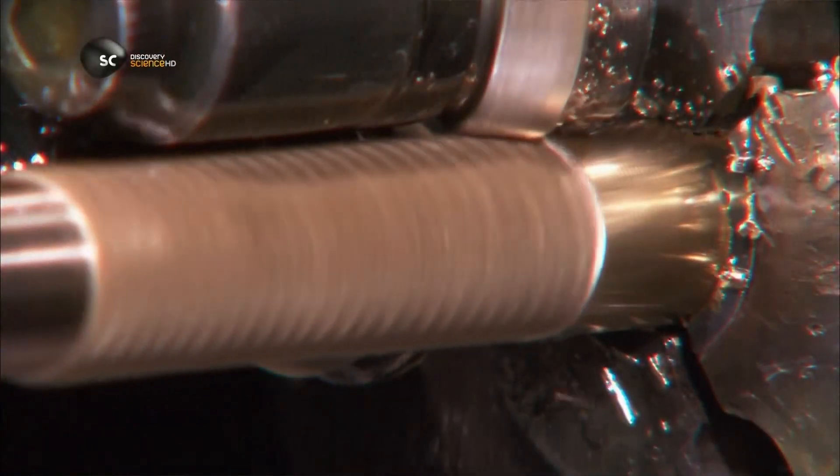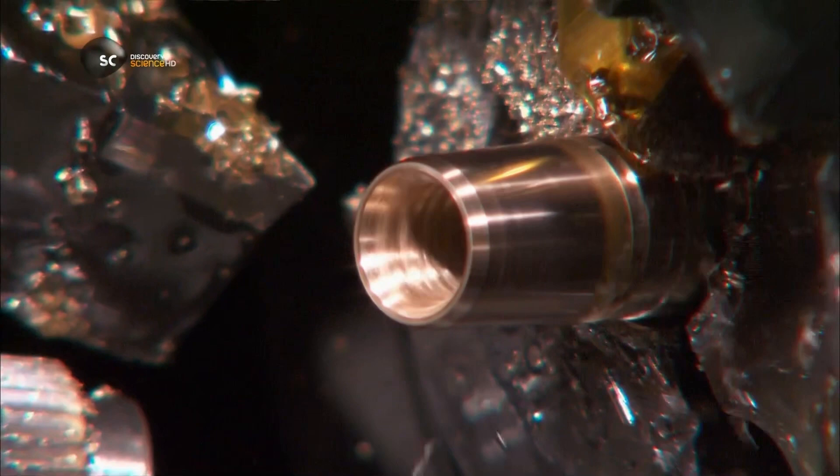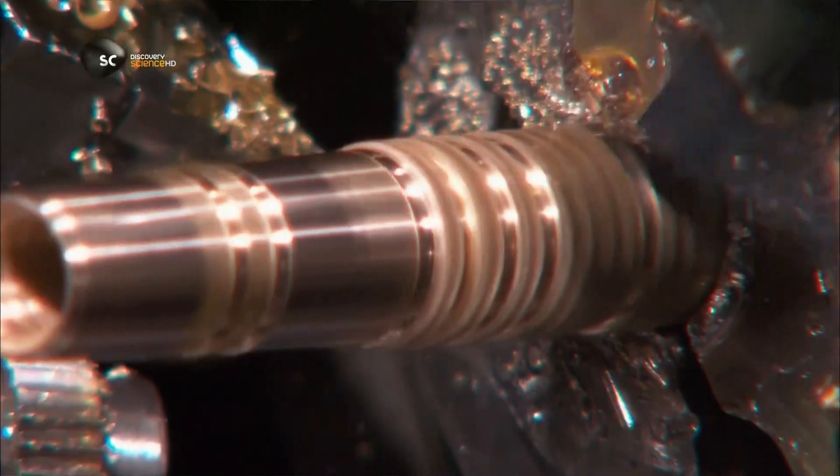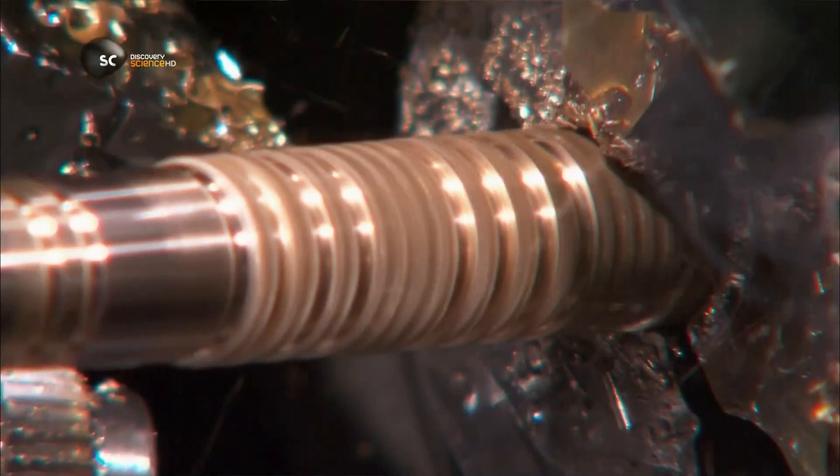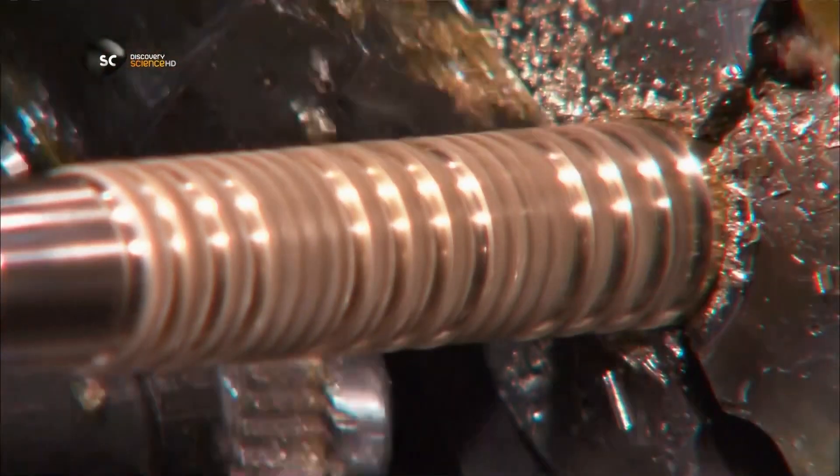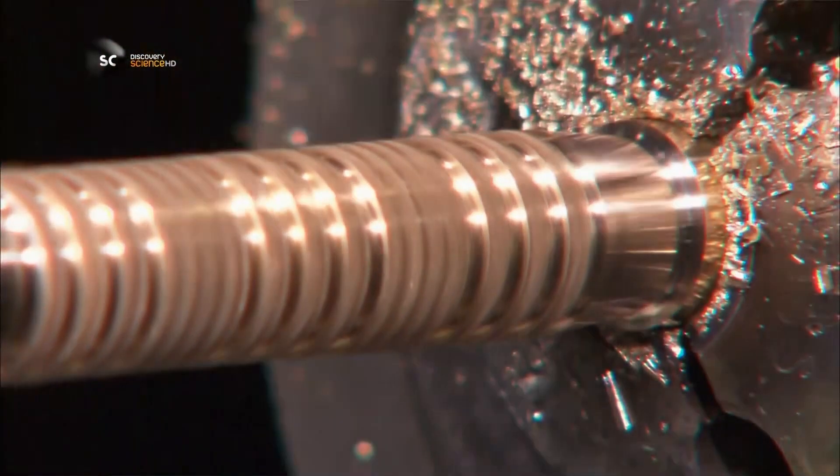Next, tools with angled grooves cut ridges on the outside of the barrel to make the dart easier to grip. The process is called knurling. Another tool then cuts the brass barrel to the correct length.